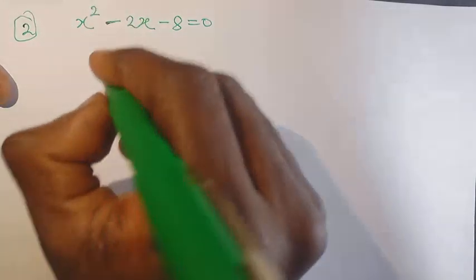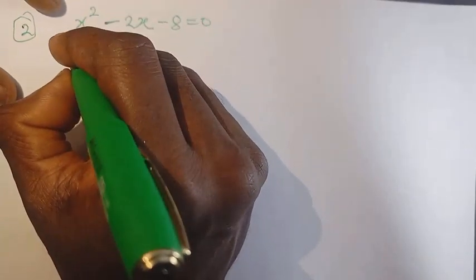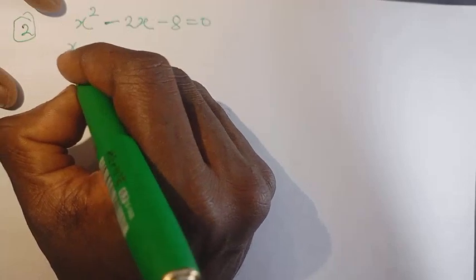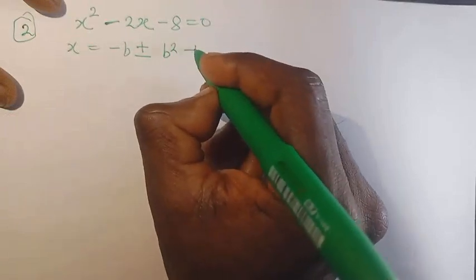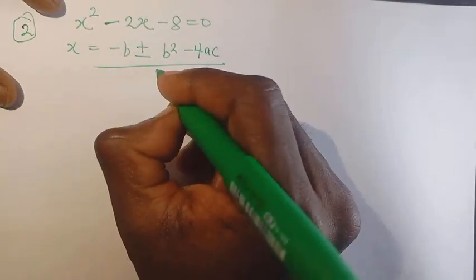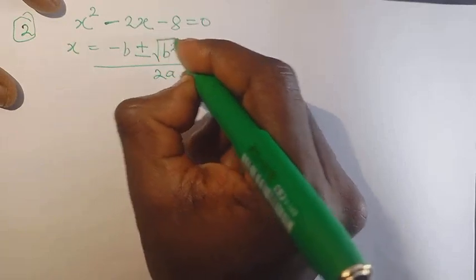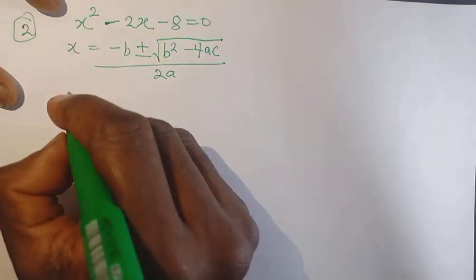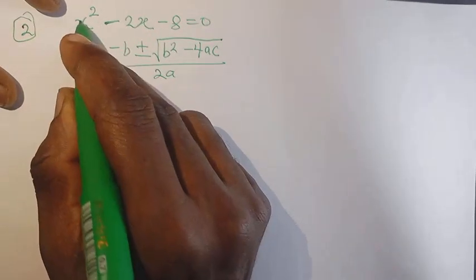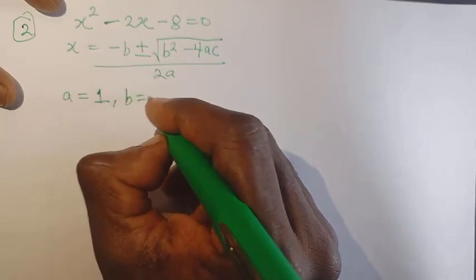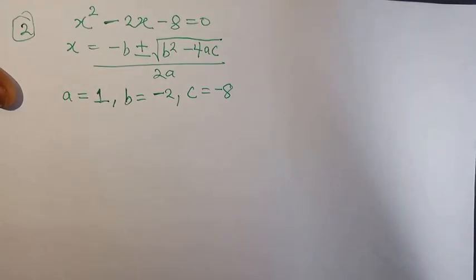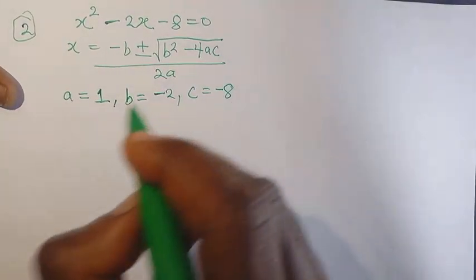Remember the formula method is x equals to minus b plus or minus root b squared minus 4ac, all over 2a. For the next quadratic equation, we have a equal to 1, b equal to minus 2, and c equal to minus 8.